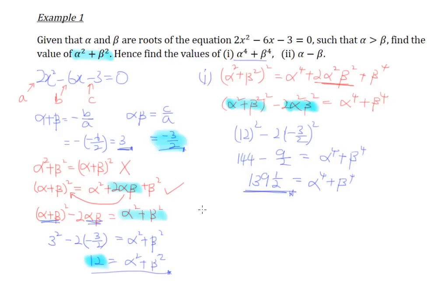Part 2 asks us to find the value of alpha minus beta. From the beginning, we know that alpha is greater than beta, so we expect alpha minus beta to be a positive value. The question is how to find it using what we know: alpha plus beta is 3, alpha times beta is negative 3 over 2, alpha squared plus beta squared is 12, and alpha to the power 4 plus beta to the power 4 is 139.5.